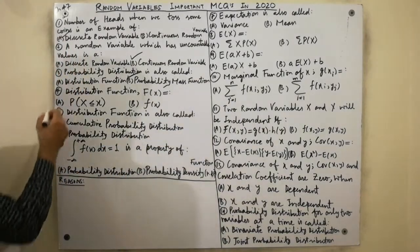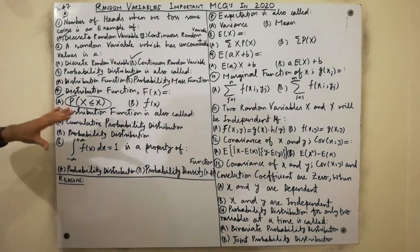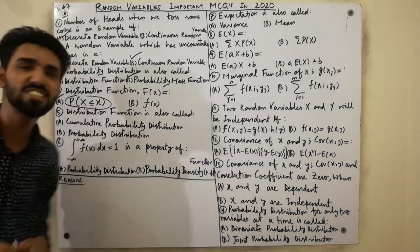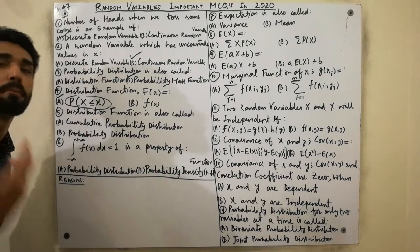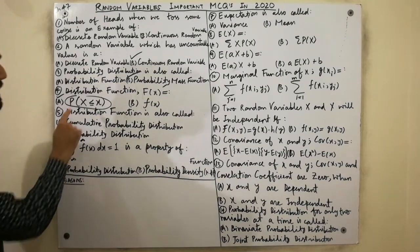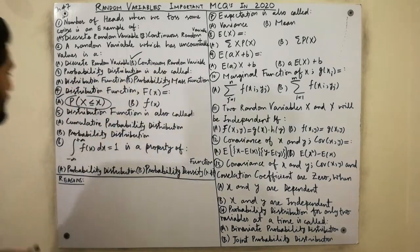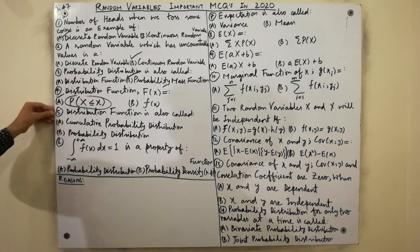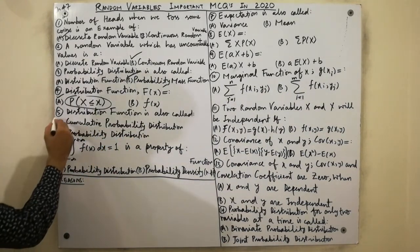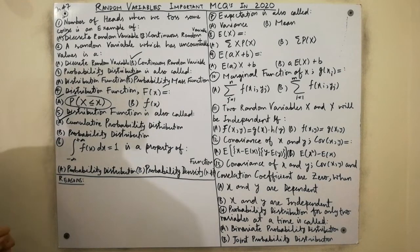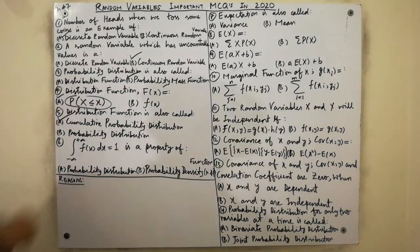The fourth MCQ: the distribution function, denoted by capital F(x), is always equal to the probability that capital X is less than or equal to small x. Remember that the distribution function gives values for P(X ≤ x).